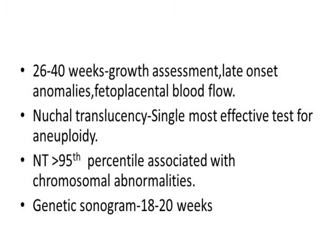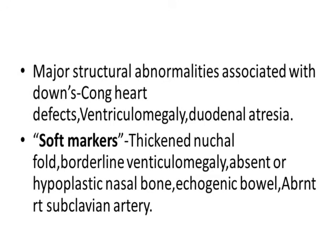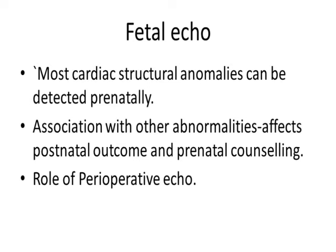Major structural anomalies associated with Down syndrome include congenital heart defects and duodenal atresia. In some cases there are no obvious anomalies but ultrasound soft markers are present. Soft markers — not true anomalies but suggestive findings — include thickened nuchal fold, borderline ventriculomegaly, absent or hypoplastic nasal bone, echogenic bowel, and aberrant right subclavian artery. Awareness of soft markers is essential as typical chromosomal anomaly findings may be absent on ultrasound.